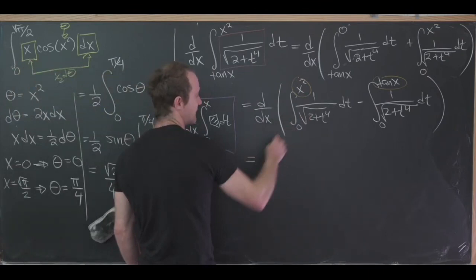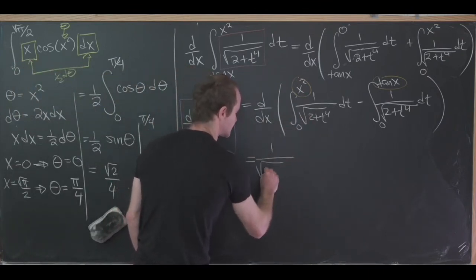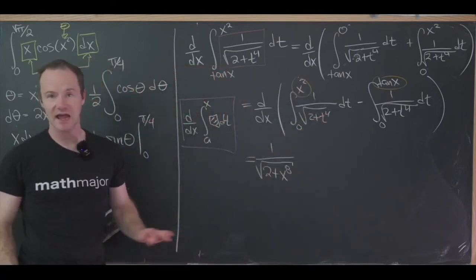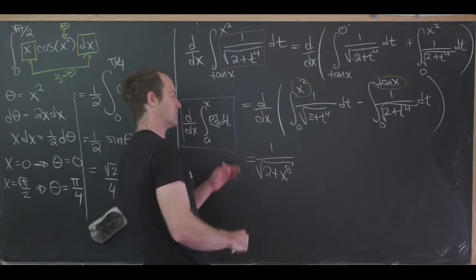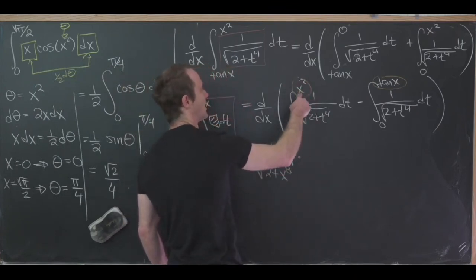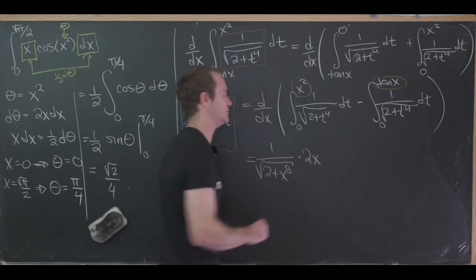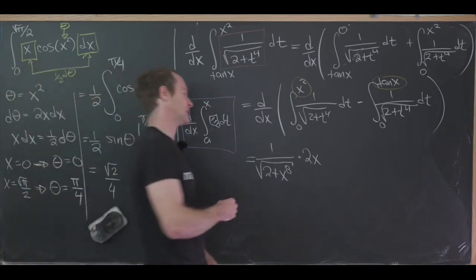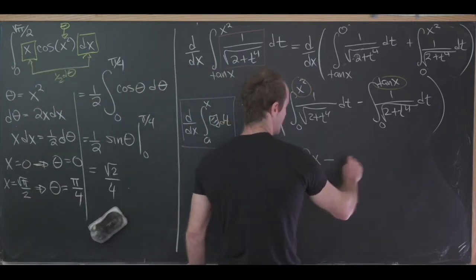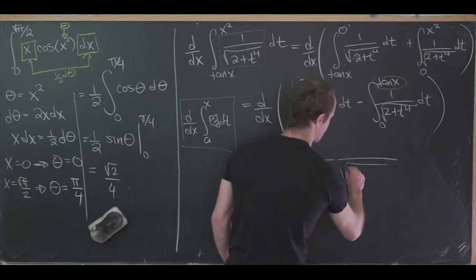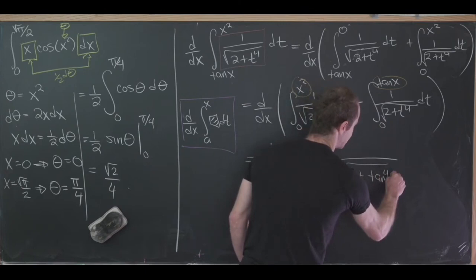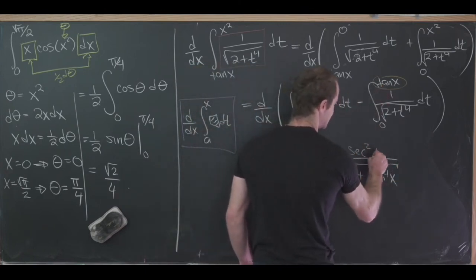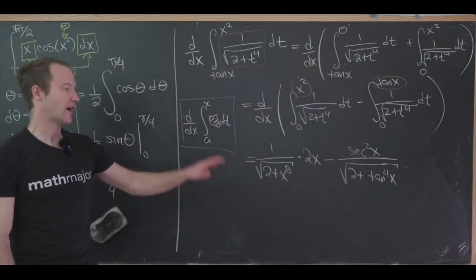Applying FTC Part 2 in concert with the chain rule: for the first integral, we get one over the square root of two plus x to the eighth — because x squared to the fourth is x to the eighth — multiplied by the derivative of x squared, which is two x. Then we subtract: for the second integral, we get one over the square root of two plus tangent to the fourth x in the denominator, times the derivative of tangent, which is secant squared in the numerator. And that would be our final derivative.